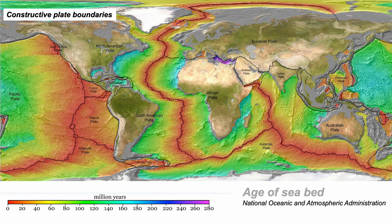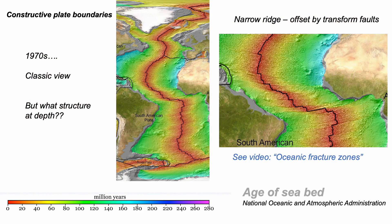But this recognition is only the start of a story of plate tectonics and of understanding the geological structure of the ocean floor. This idea that the Earth's surface was crisscrossed by constructive plate boundaries was established in the 1960s. Moving into the next decade, constructive plate boundaries are considered to be narrow, exemplified by the mid-Atlantic ridge, illustrated here in 21st century mapping. But what's the geological structure? How is new seafloor created?